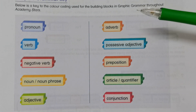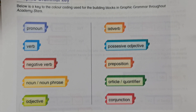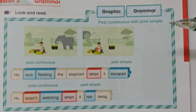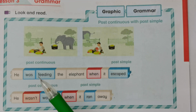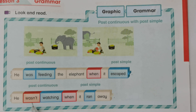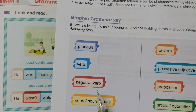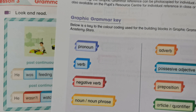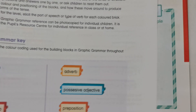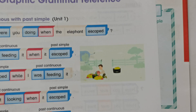You will need to recognize the graphic grammar key here. Looking at the pupils book, for the past continuous we add -ing. For the negative form, the negative word is 'wasn't' and the conjunction is 'when' or 'while'.